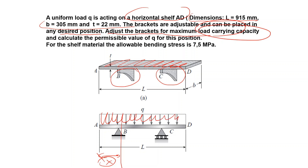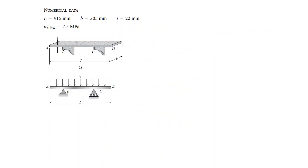We assume there is a distributed load q acting on the shelf, and for this position we have to calculate the permissible value of q. The shelf material is probably wood and its allowable bending stress is 7.5 megapascals.